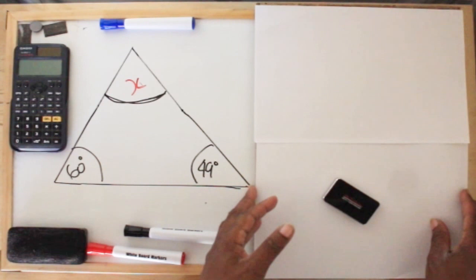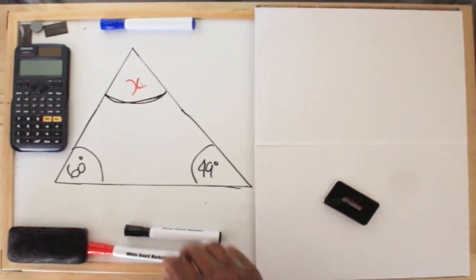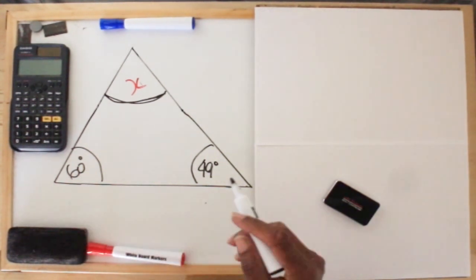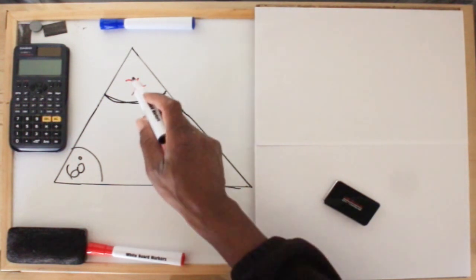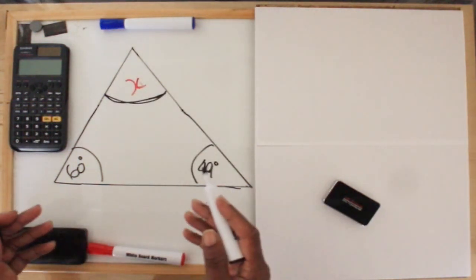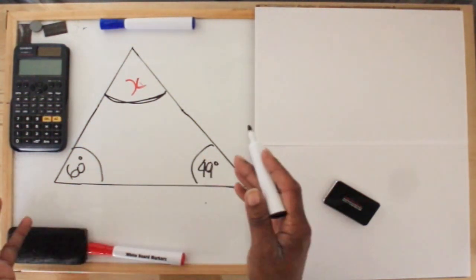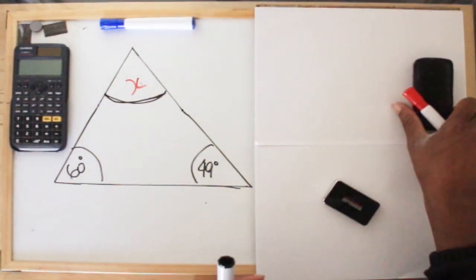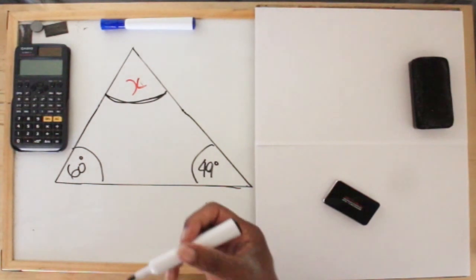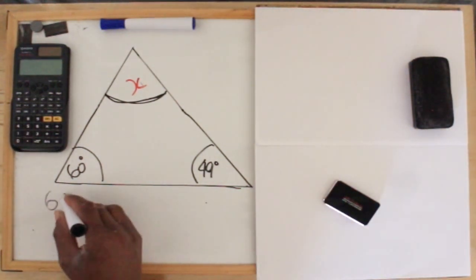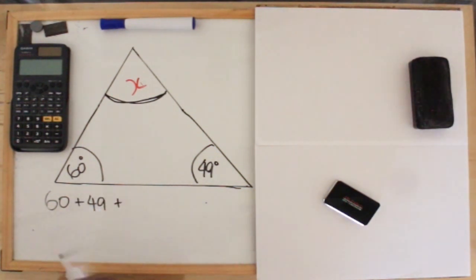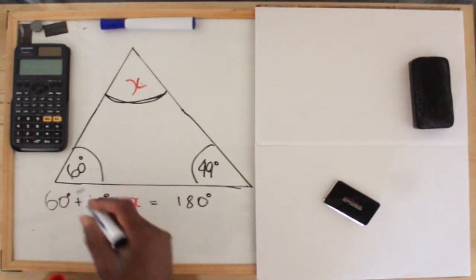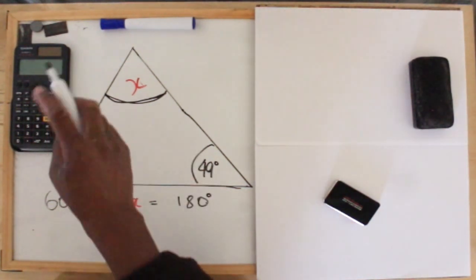Now here we have a scalene triangle. There are three angles here: there's 60 degrees, there is 49 degrees, and there is x. We know that in any triangle all the degrees add up to 180 degrees. So what we're trying to find out is the value of x. We would normally set it up as: 60 plus 49 plus x equals 180. First of all, find out what 60 plus 49 is.